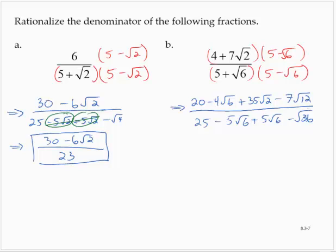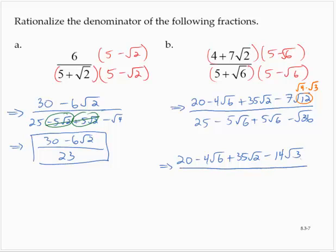In the numerator, I need to be careful about one thing: the square root of 12, since 12 is 4 times 3, equals the square root of 4 times the square root of 3. So the numerator becomes 20 minus 4 root 6 plus 35 root 2, and since the square root of 4 is 2, I have 7 times 2 which is 14 times the square root of 3. In the denominator, the middle terms again combine to 0, leaving 25 minus 6, which is 19.